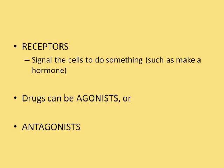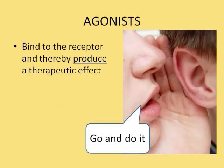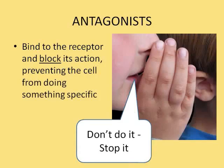Receptors are structures on the cells that tell the cells to do something. Drugs can be agonists, where they bind to the receptor and produce a therapeutic effect — for instance, binding to a receptor and signaling to raise blood pressure after blood loss. Or drugs can be antagonists, where they bind to the receptor and block its action, preventing the cell from doing anything — for example, telling the body to stop raising blood pressure when it's already too high.